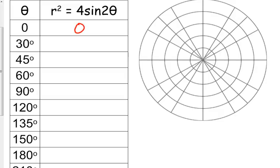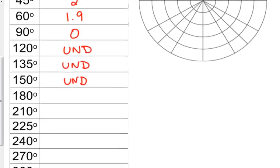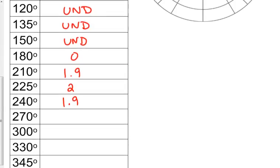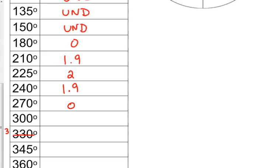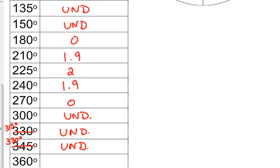Alright, 30, what do we get? 1.9. 45, 2. 60, 1.9. 90, 0. 120, undefined. 135, undefined. 150, undefined. 180, 0. 210, 1.9. I bet the next one's 2, and I bet the next one's 1.9. And 270 is 0. Our 300s, and again, I mentioned this, that should be 315 and 330, not 330 and 345. But I bet those are all undefined. Are they not? I believe they are. Because when you type them in, you get a negative. Can't take the square root of a negative. And then 360 is 0.